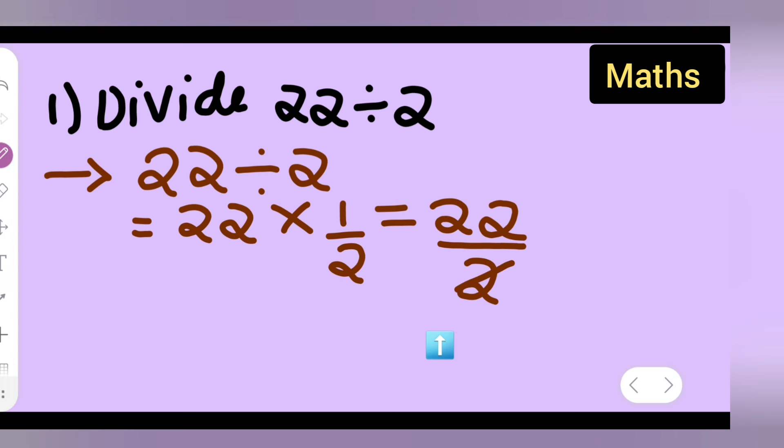Then cancel this. 2 into 2 is 1, so the answer is 11. So I hope you all have understood how to divide this: 22 divided by 2. And thanks for watching.